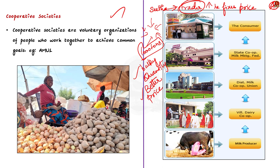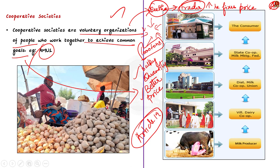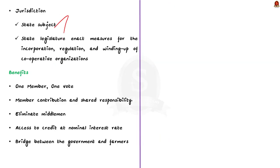Cooperative societies are voluntary organizations where people work together to achieve common goals — such as getting a better price for their produce. A very familiar example is Amul. It is your fundamental right to form a cooperative society — Article 19 of the Indian Constitution establishes this as a basic right, and the DPSP also talks about cooperative societies. Cooperatives are a state subject under the Constitution, meaning they fall under state government jurisdiction. Multi-state cooperatives operate across more than one state.